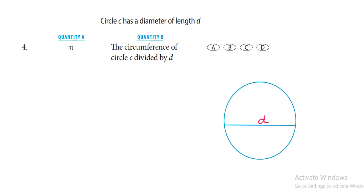Quantity A shows π, and quantity B shows the circumference of circle C divided by d. What will be the circumference of the circle? The circumference of the circle is π times d.